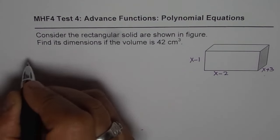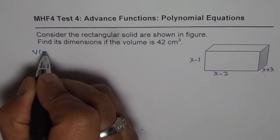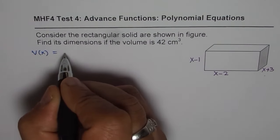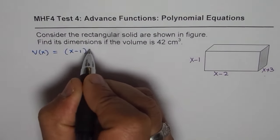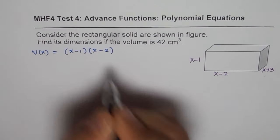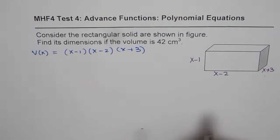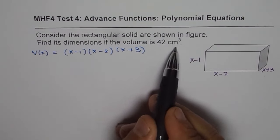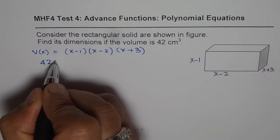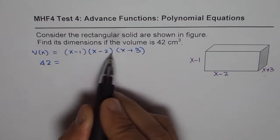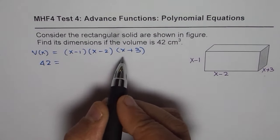So volume is the product of all three. As a function of x, we can write volume as equal to (x-1) times (x-2) times (x+3). Now we are given volume of 42 cm³, so we'll replace V(x) as 42 and we can expand this to find the polynomial function.